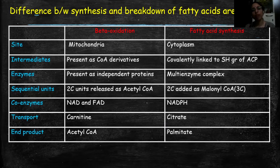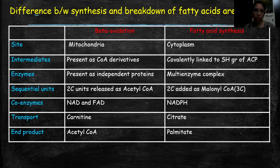The electron carriers differ between the two pathways. In beta-oxidation, the enzymes used include NAD and FAD, while in fatty acid synthesis the enzyme required is NADPH. The full form of NADPH I have mentioned — if you forget, please mention it in the comment box. For beta-oxidation, we also require one transport molecule.